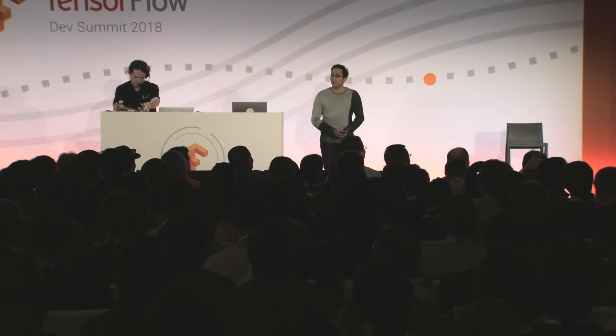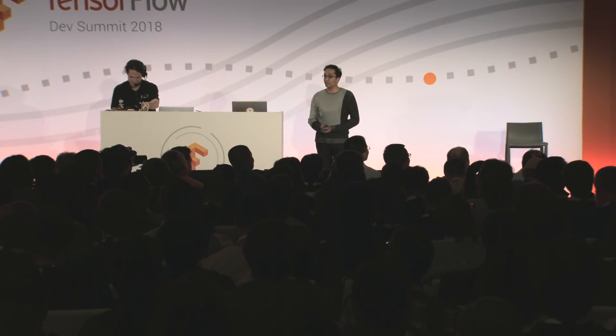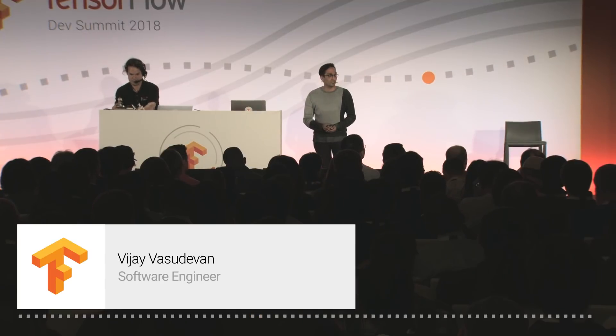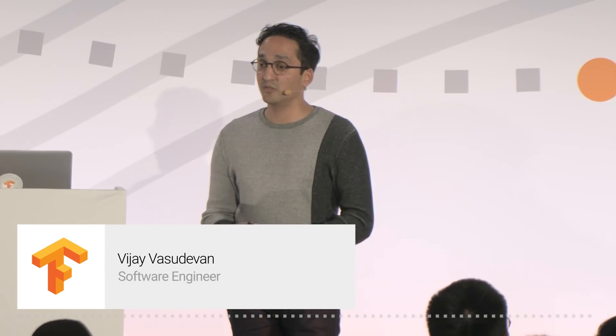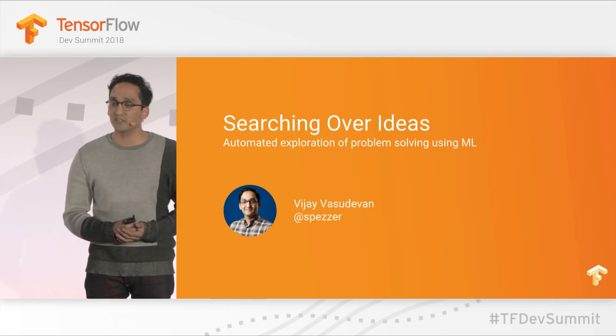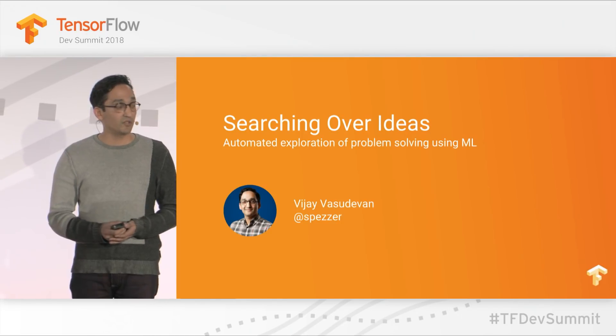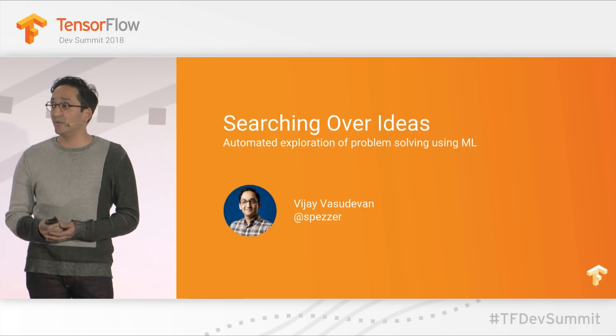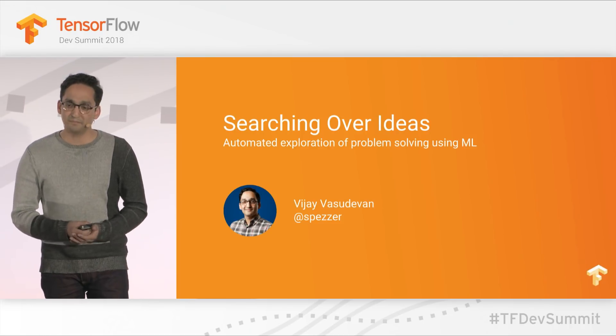This is Vijay. Today I'll be talking to you, or hopefully convincing you, that when we try to apply machine learning to solving problems, we should really be thinking about designing search spaces over solutions to those problems. Then we can use automated machine learning techniques in order to evaluate our ideas much more efficiently.